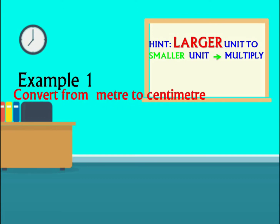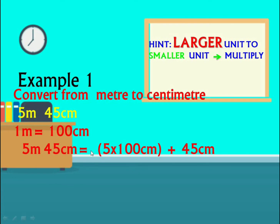Convert from meter to centimeter: 5 meters 45 centimeters. Meter is a larger unit, so we multiply. 1 meter equals 100 centimeters. Then 5 meters 45 centimeters will be equal to 5 times 100 centimeters plus 45 centimeters. We leave 45 centimeters alone because it's already written in centimeters. 5 times 100 gives 500 centimeters, plus 45 centimeters, that gives 545 centimeters.